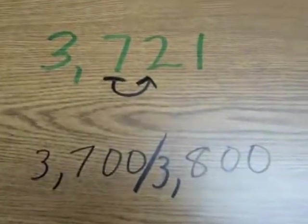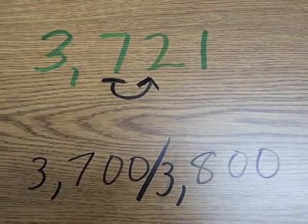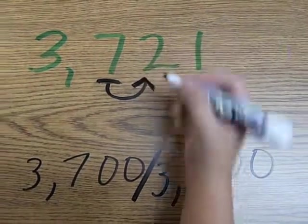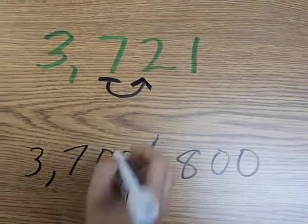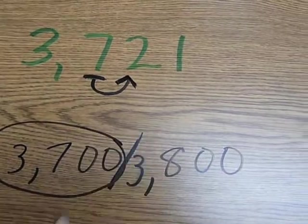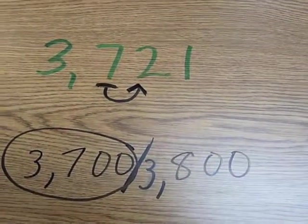So tell us about the neighbor. The neighbor is only a 2, which is less than 5. So this number rounds down to 3,700. Well done.